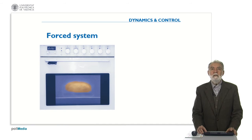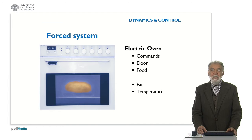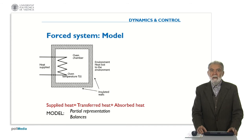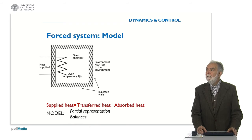In the case of a forced system, for instance, here we have a kitchen oven — an electrical oven. We have some commands to set the different temperatures, the different heating, and so on. We can open or close the door; we can put in more or less food. There is also the option to start the fan. And there are many variables like temperature outside, inside, the lights, and so on. In a schematic way, for this physical system, we can have a schematic model where we can see that the way this oven behaves is due to the balance between heats.